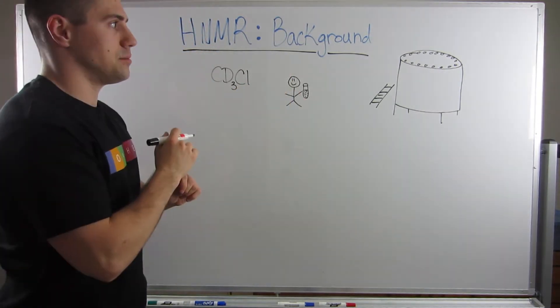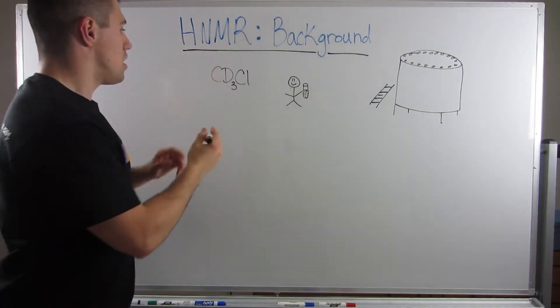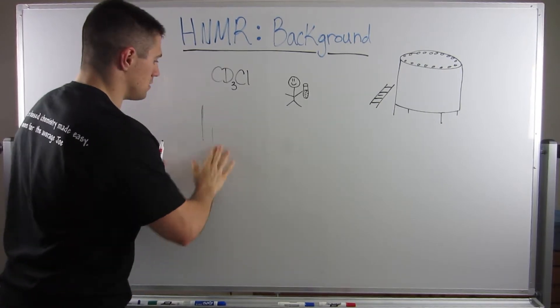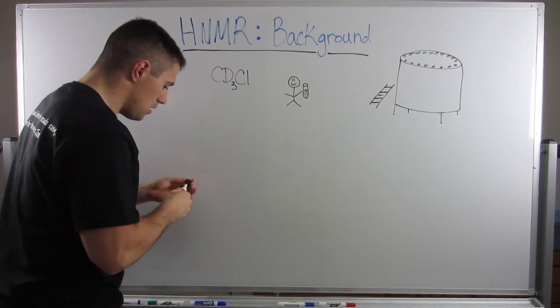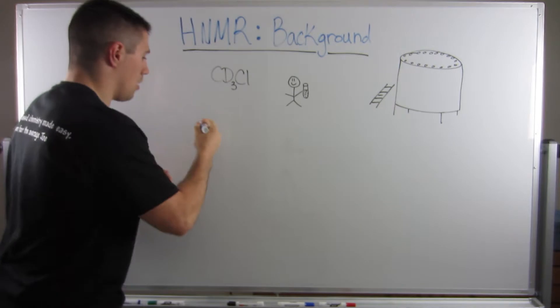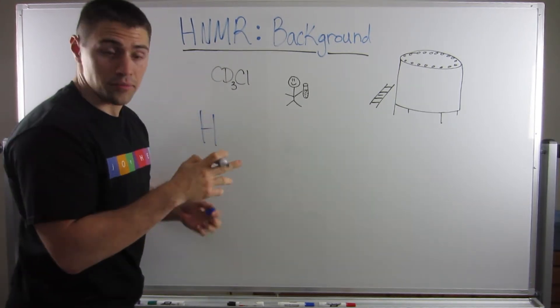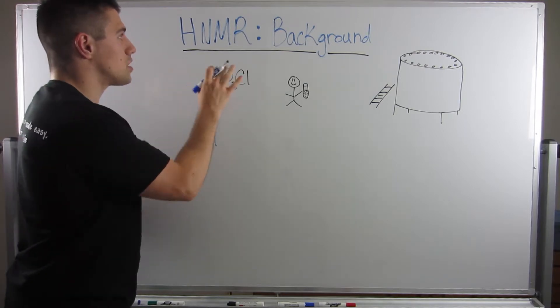Okay. So what happens inside the machine? So it's important to know that we can assume hydrogens, right? We know them, and this marker is not very good. We know them to be one electron, one proton, one neutron. So this is proton NMR.